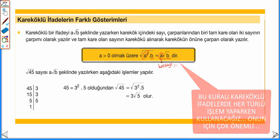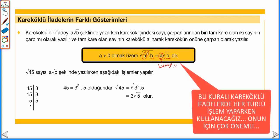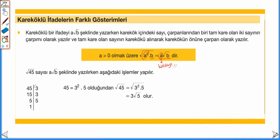√45 sayısını A√B şeklinde yazarken, 45'in çarpanlarını bulamazsak asal çarpanlarını ayırıp bu ifadeyi A√B şeklinde yazabiliriz. Asal çarpanlarını ayırdıktan sonra, her iki tane asal sayıdan birisi kökün dışına çıkar. Tek olarak kalanlar kökün içinde yazılır. Dolayısıyla √45 = 3√5 olarak ifade edilir.